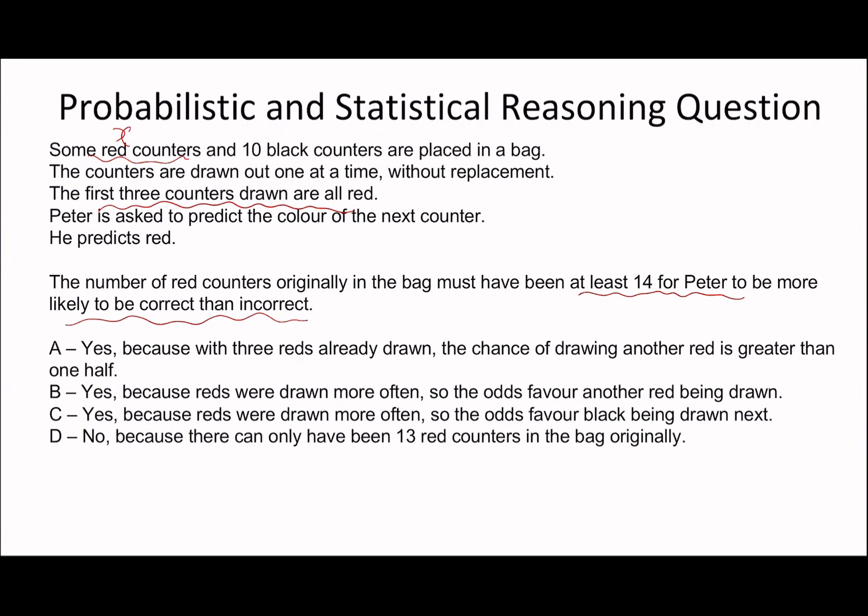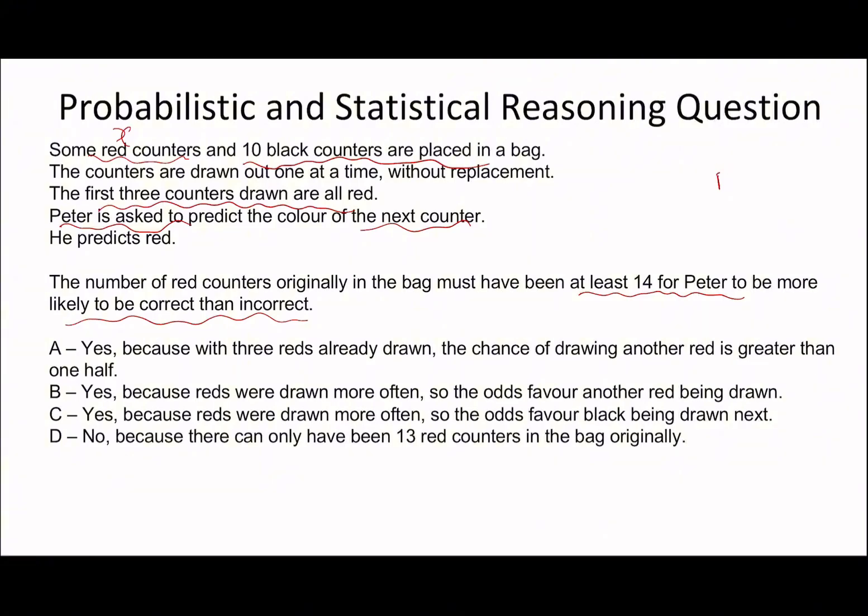If Peter is more likely to be correct than incorrect, that means you must have more red than black, and we know that none of the black are pulled out. That means currently there are 10 black counters. How many red counters, we don't know, but if it's more likely, it has to be greater, and so therefore we know we need at least 11, for example.